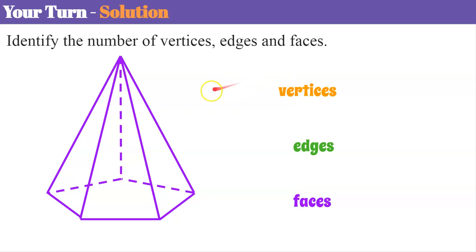Alright here's our solution. So first I'm going to count the vertices. So we're going to start at the top. We know that we're going to have six. I hope you got that. Now let's go count them together. One, two, three, four, five, six. Six vertices.